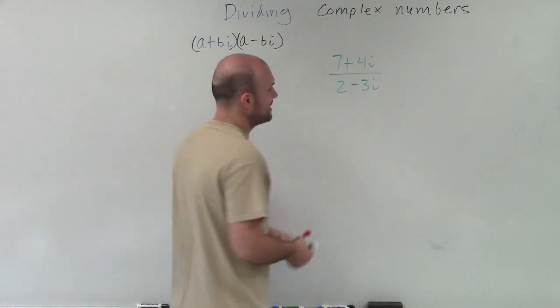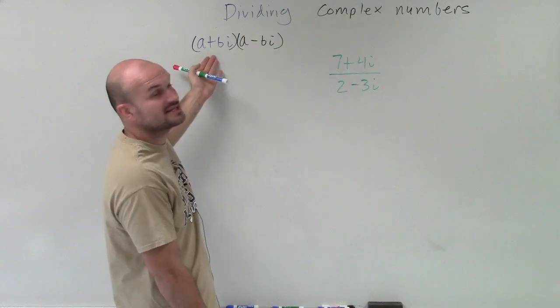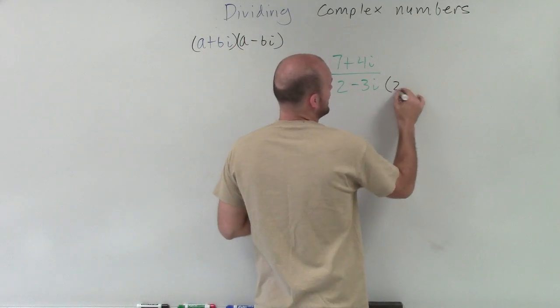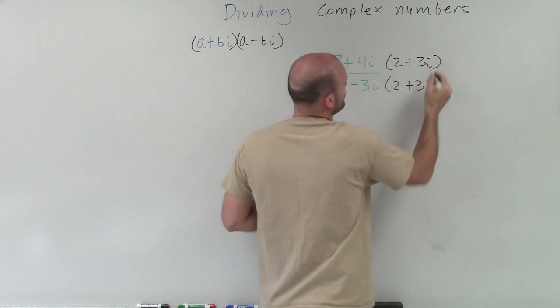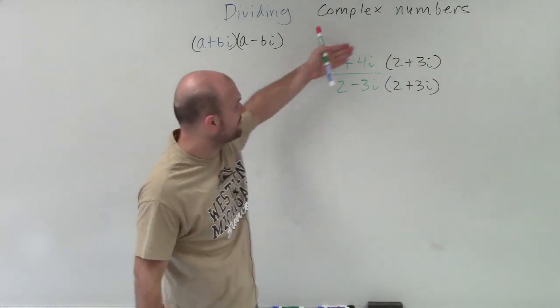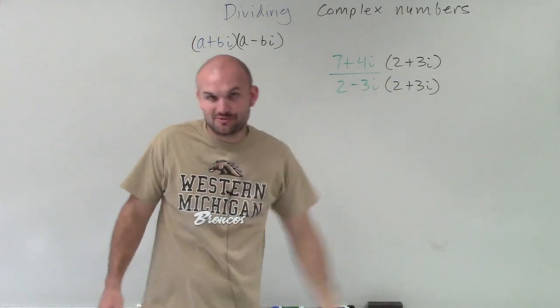So to do that, I have to multiply by the conjugate. Well, in this case, if I have 2 minus 3i, the conjugate is going to be 2 plus 3i. So I multiply by my conjugate in the denominator, and I have to make sure I multiply it in my numerator. So now I have a couple different products. I have 7 plus 4i times 2 plus 3i, and I have 2 minus 3i times 2 plus 3i.